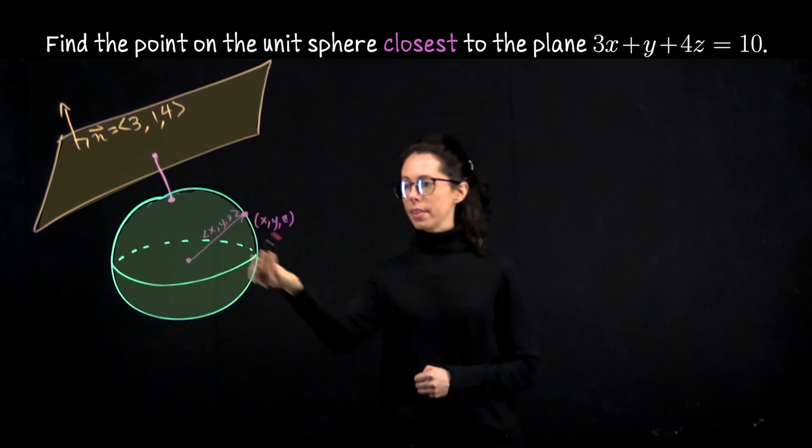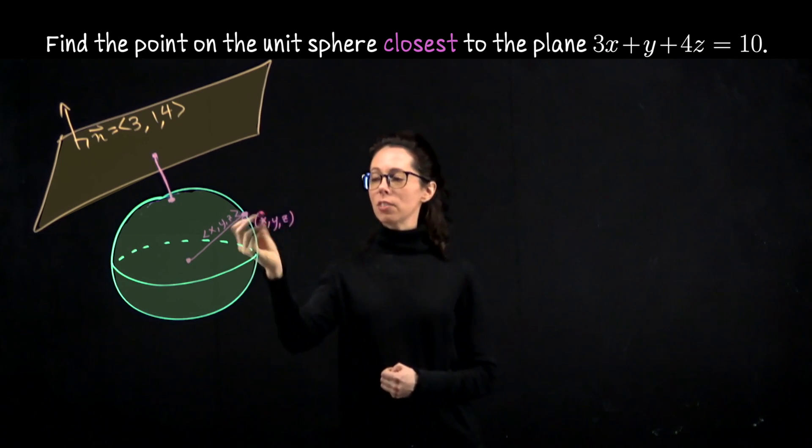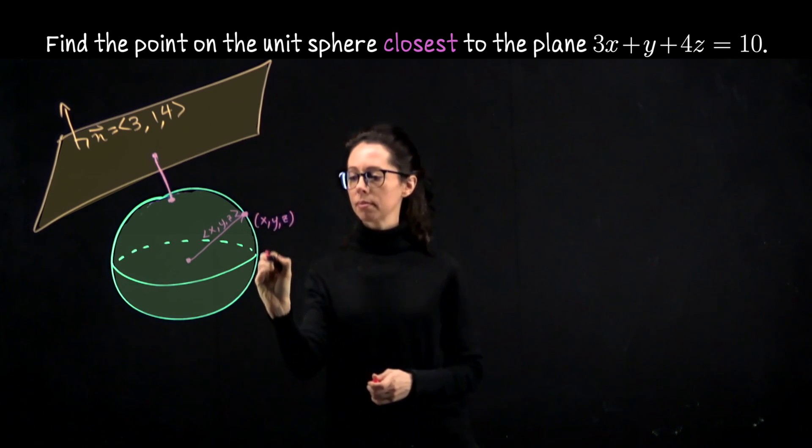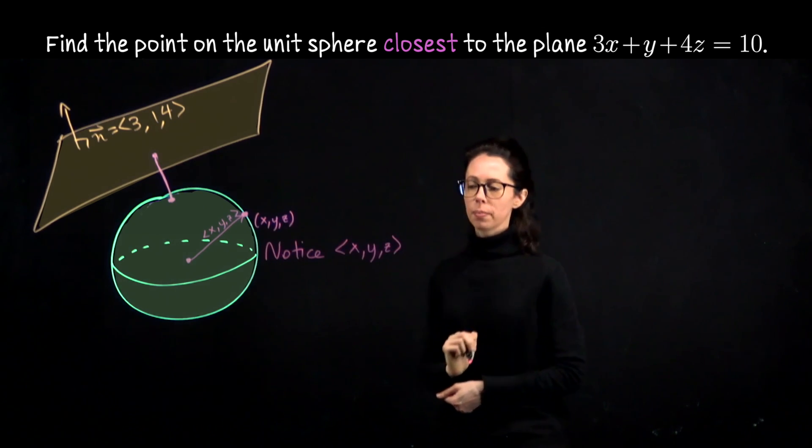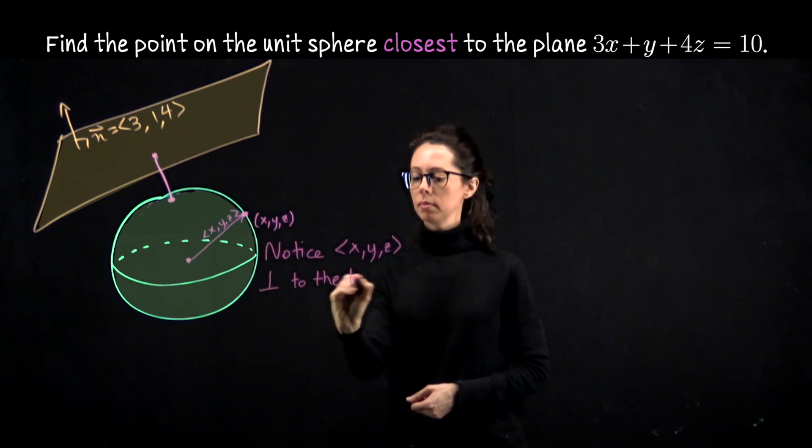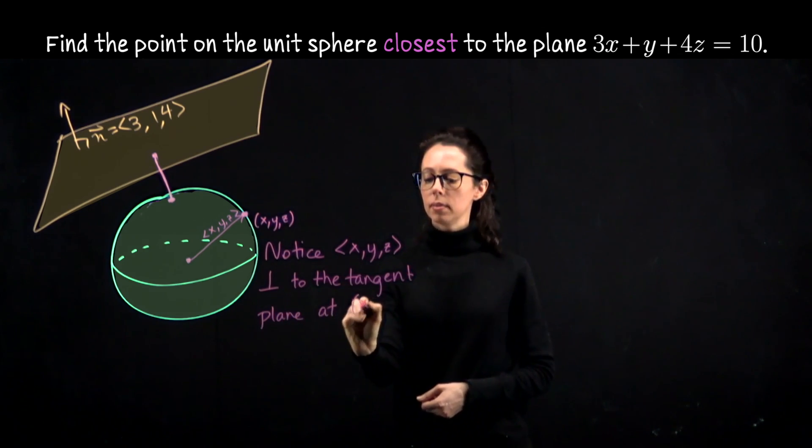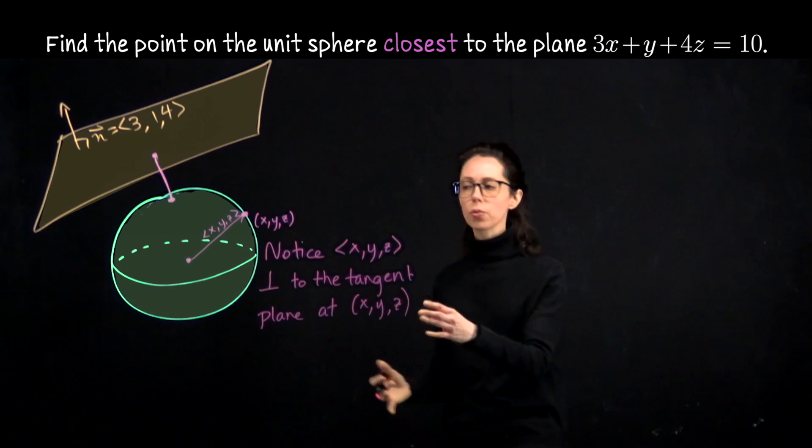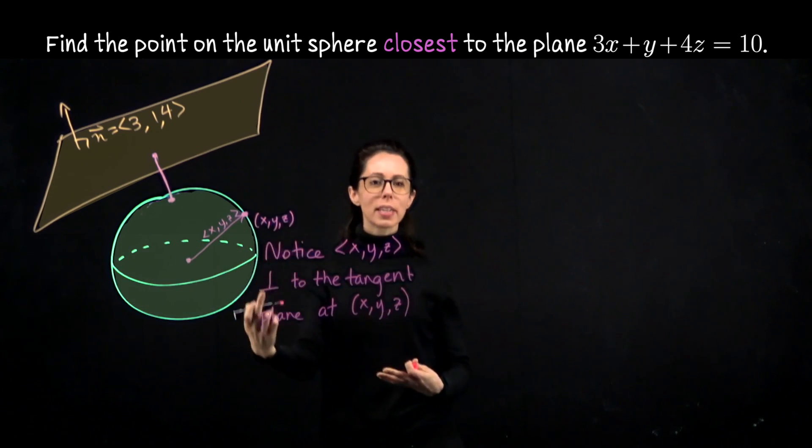Because this is a sphere, this position vector is perpendicular to the sphere, which means that this position vector is perpendicular to the plane tangent to the sphere at this point. So notice x, y, z written as a vector is perpendicular to the tangent plane at x, y, z. And this statement I'm making here is true because we're working on a sphere. That wouldn't be true in general, but it is true for a sphere because of this radial symmetry we have. No matter how you draw a radius, it's perpendicular to the sphere itself.